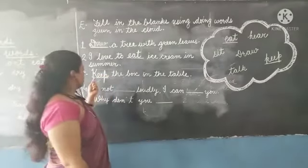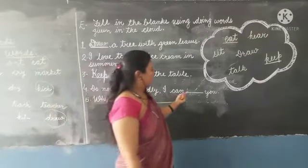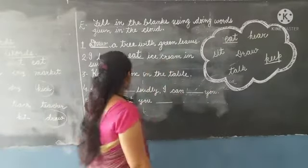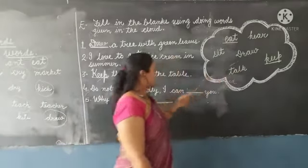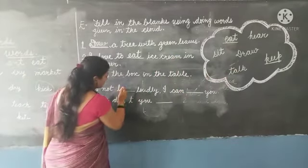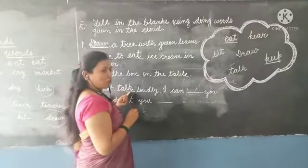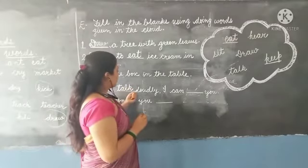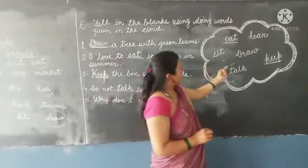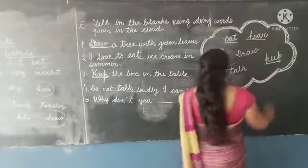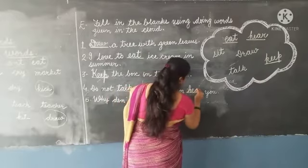Next: Do not blank loudly, I can blank you. Do not talk - T-A-L-K. 'Talk' is a doing word. Do not talk loudly. I can hear - H-E-A-R. 'Hear' is also a doing word.